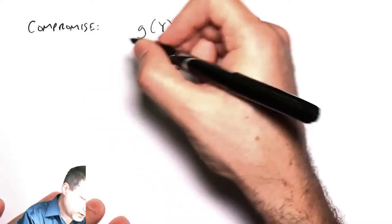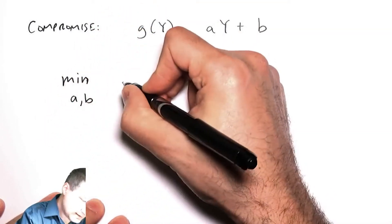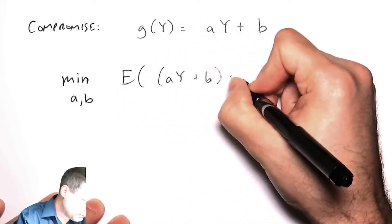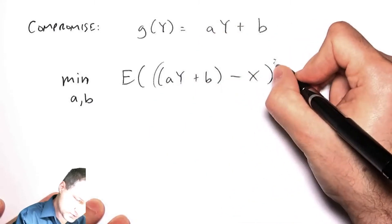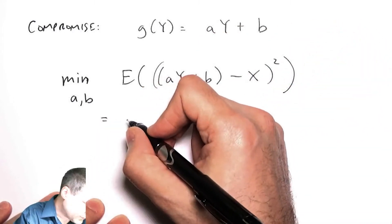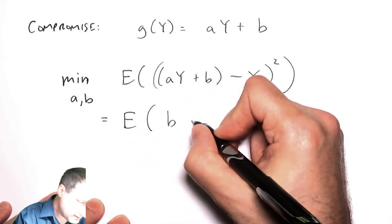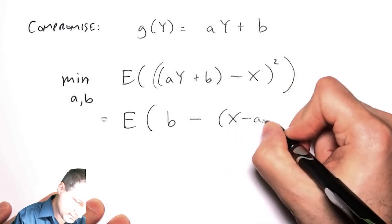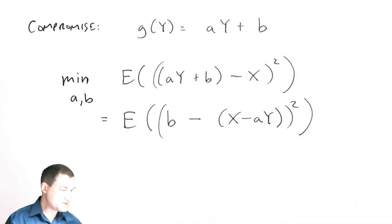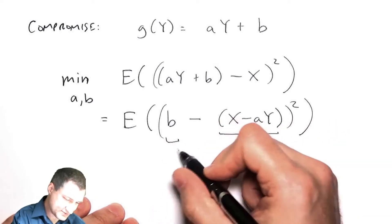So now it's more like I have a minimization problem over minimizing the two values of a and b: the expected value of this function of y minus x squared. Or a slightly different way of saying this is E((b - (X - aY))^2).